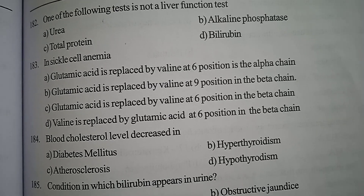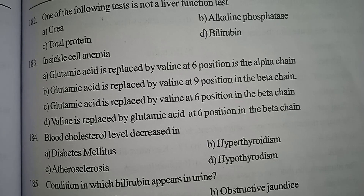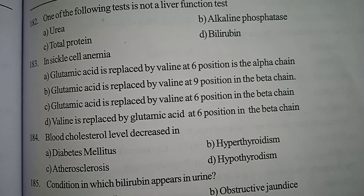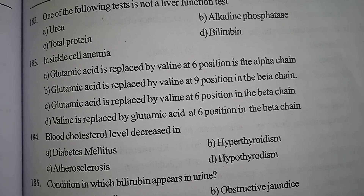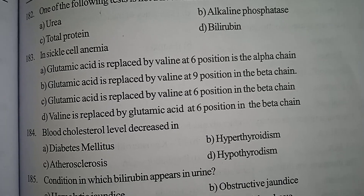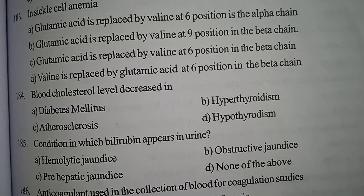Correct answer: Option C — Glutamic acid is replaced by valine at the 6th position in the beta chain.